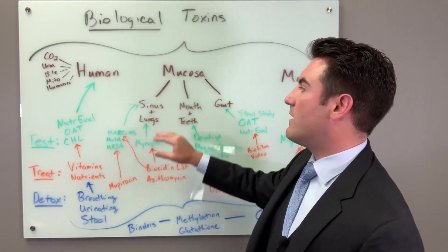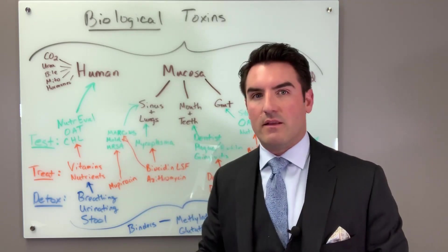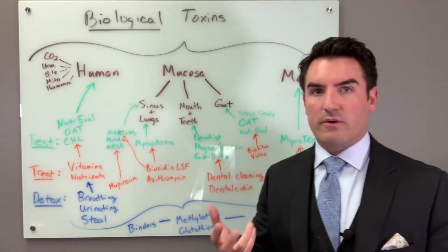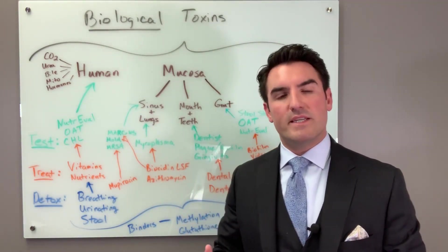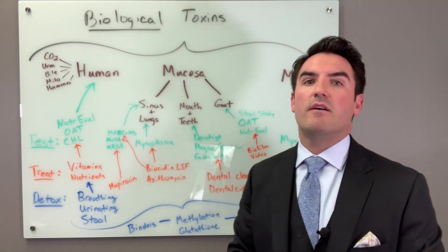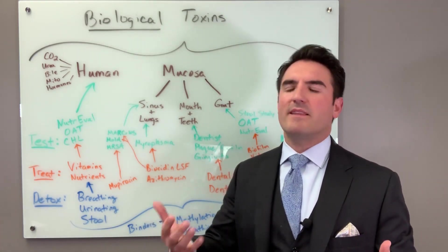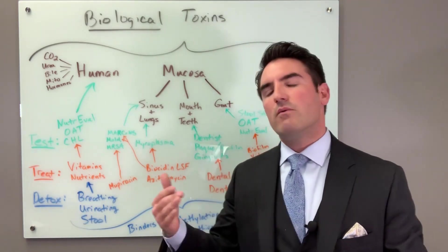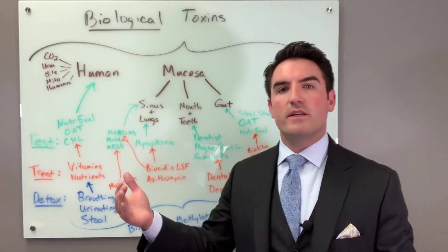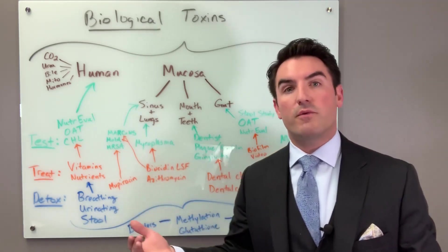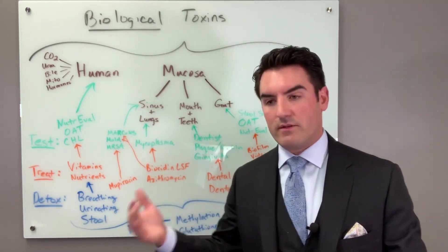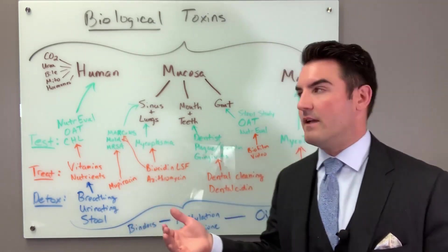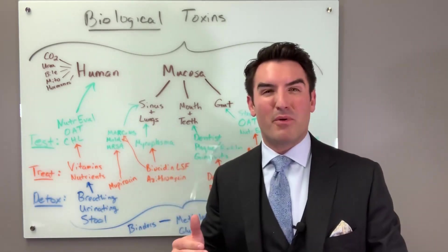So let's start there. First I want to mention the sinus and lungs, so your respiratory tract. The sinus and lungs frequently get overlooked as potential sources of biological toxins. We seem to forget that whatever happens at the dentist stays at the dentist and doesn't make it to the doctor's office. Well, I can guarantee you that if you're going to your dentist and he's asking you to do frequent cleanings or deep cleanings or all the things dentists do that I don't fully understand yet, then you probably have a problem. You have a problem with your oral microbiome.